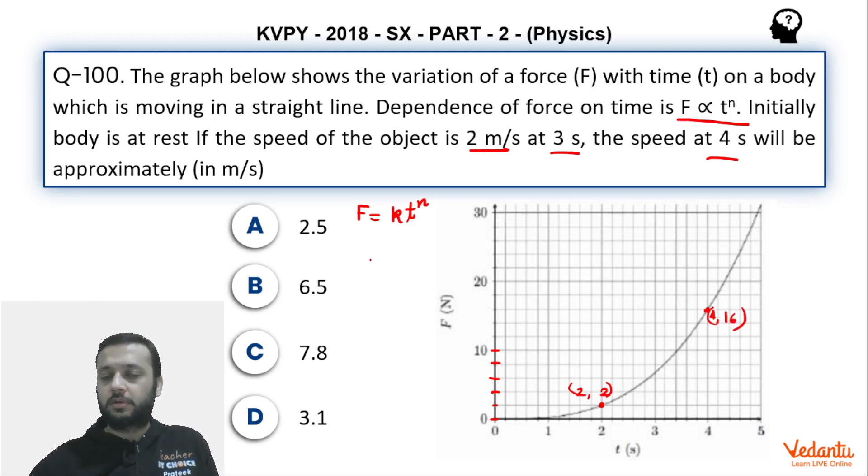Now if you use these two values, we can say that when force was 2, K was K and time was 2. And when force was 16, then K was K and time was 4 to the power n. If you divide the second equation by the first equation, then on the LHS you are going to get 8. 16 by 2 is 8, K will cancel out. 4 by 2 to the power n will become 2 to the power n. This gives us n equals 3. And if you put n equals 3 in any of the equation, so 2 upon 8 is 1 by 4, so K becomes 1 by 4.